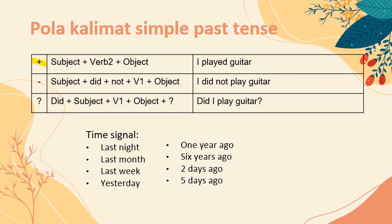Subject itu contohnya I, you, they, we, he, she, it, my brother, my father, my mom, my dog, my friends, dan lain sebagainya. Ditambah verb 2 — verb 2 itu merupakan kata kerja. Verb itu ada verb 1, 2, 3, dan verb -ing. Contohnya dari kata 'membaca': verb 1 = read, verb 2 = read, verb 3 = read, dan verb -ing = reading. Ditambah objek. Contoh: 'I' sebagai subject, 'played' sebagai verb 2, dan 'guitar' sebagai objek. Jadi, 'I played guitar' artinya saya bermain gitar.